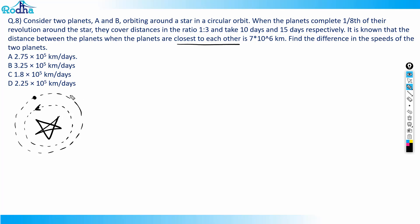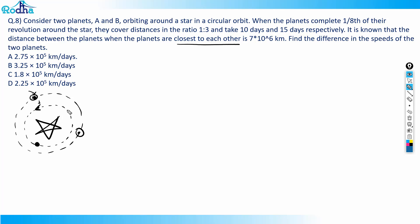One planet is faster and the other is slower. At different times they will be at different positions, but at one point they will all come in a straight line. So the slower planet is here and the faster planet crosses it. When all three are in a straight line, the distance between the planets is d = 7×10⁶ kilometers.